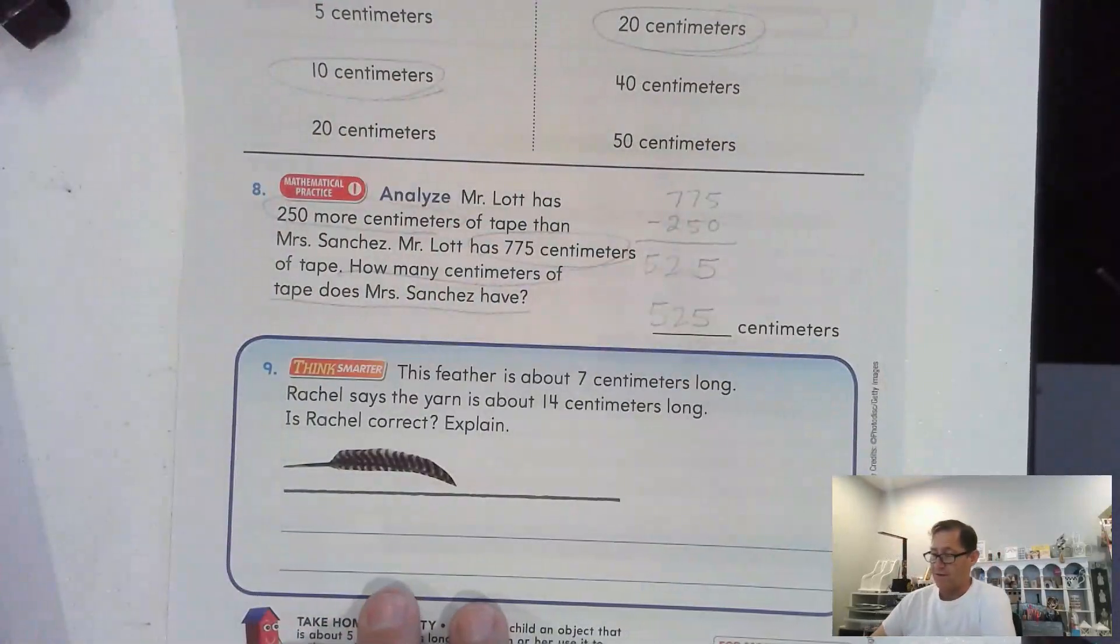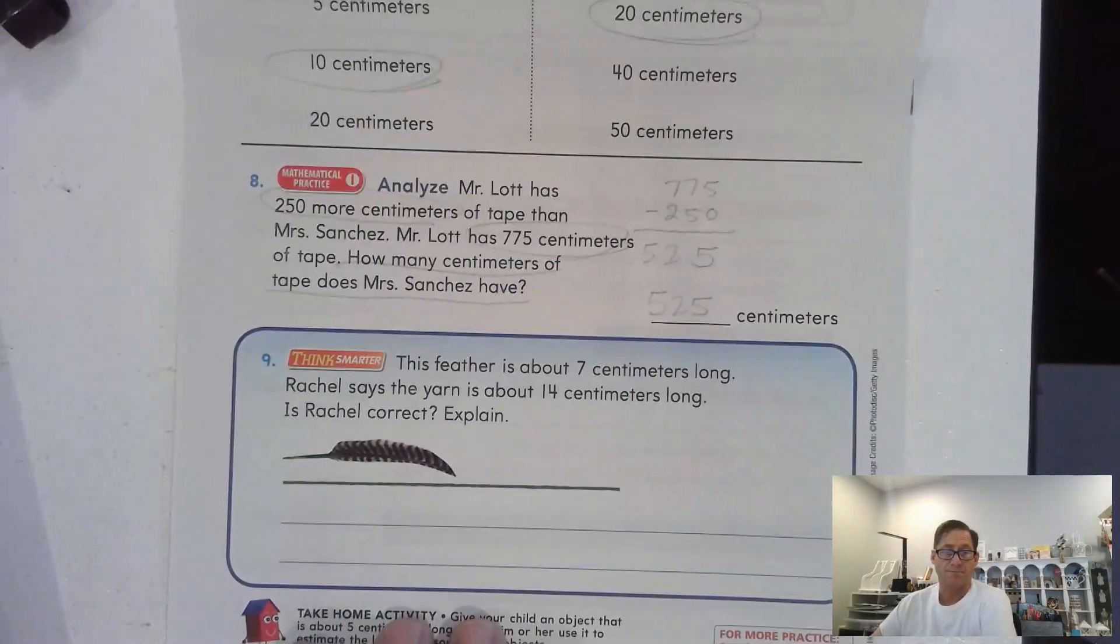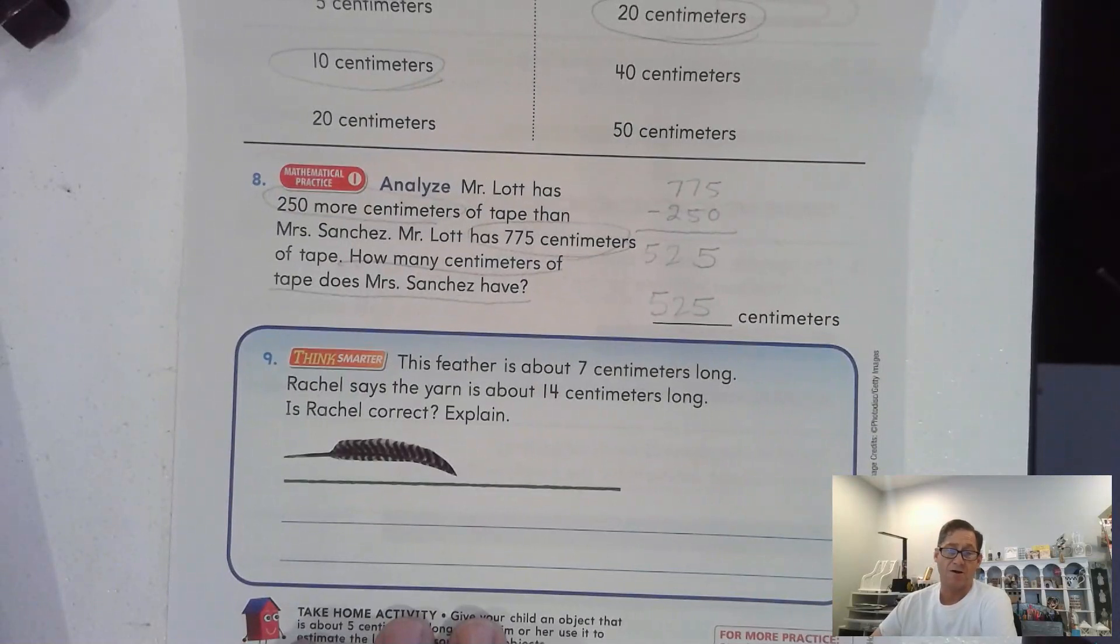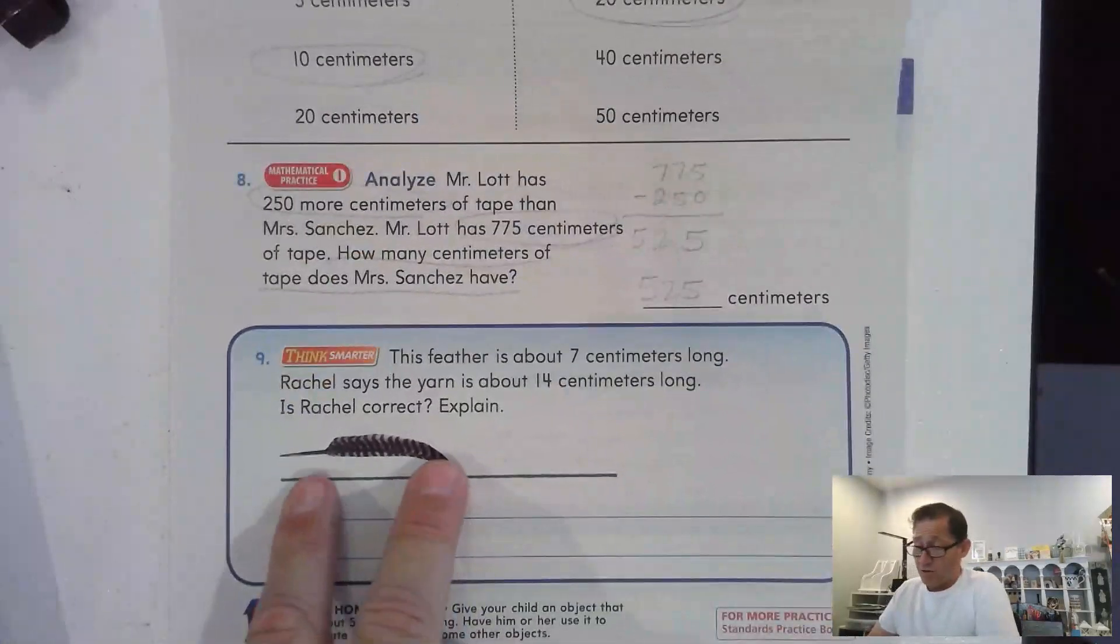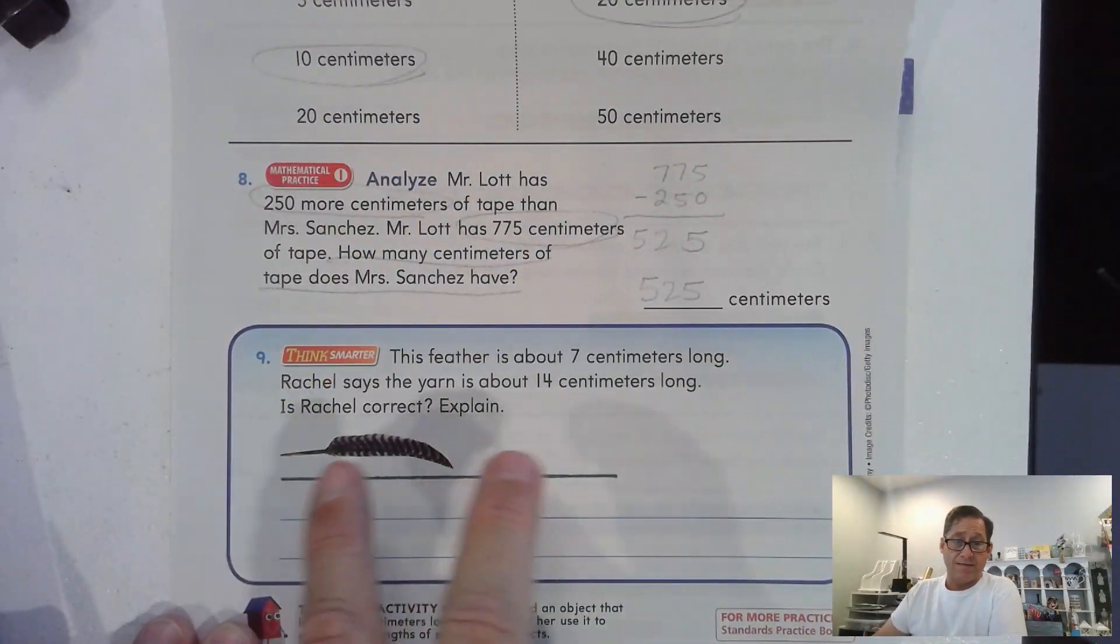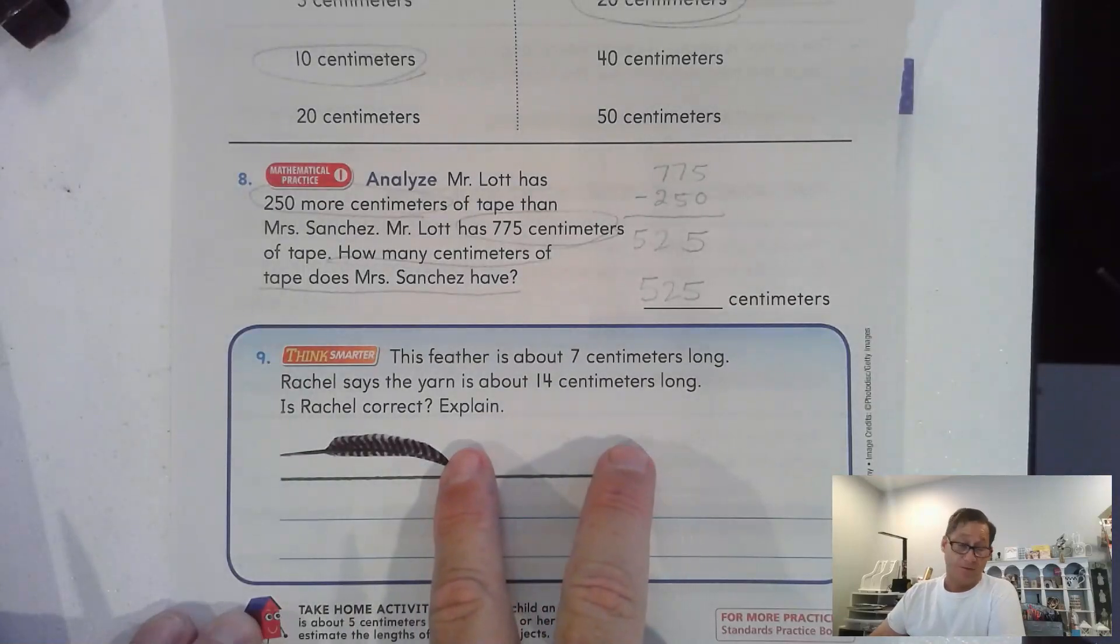All right, this feather is about 7 centimeters long. Rachel says the yarn is about 14 centimeters long. Is Rachel correct? Yeah, she's pretty close. Is it possible to get two of these feathers? Yeah.